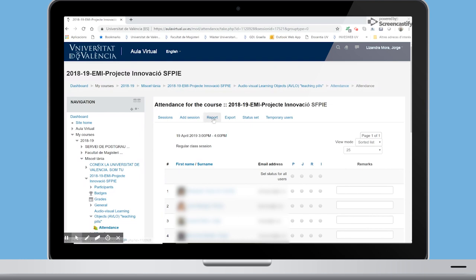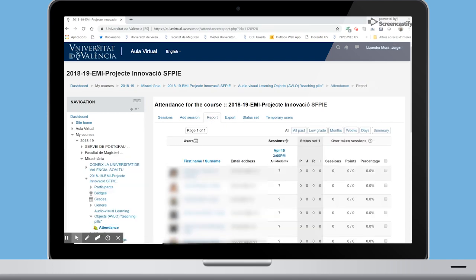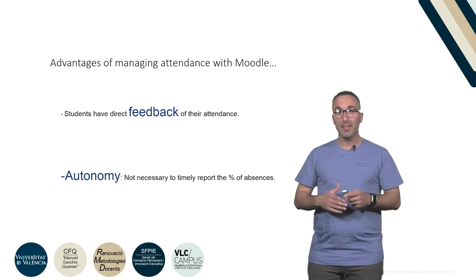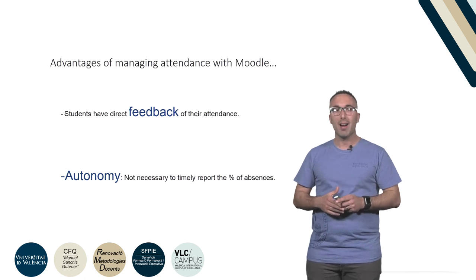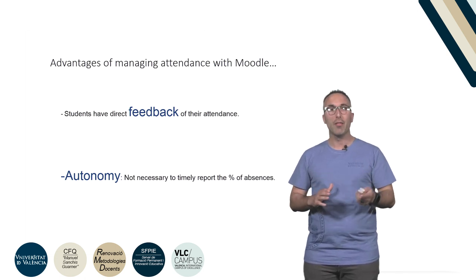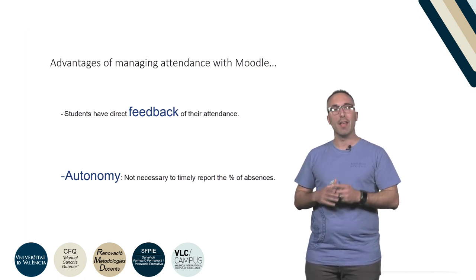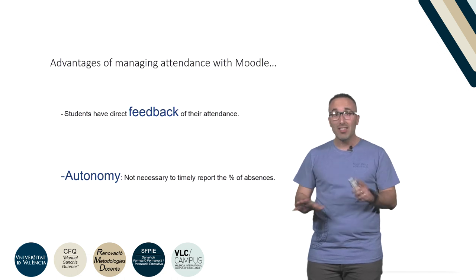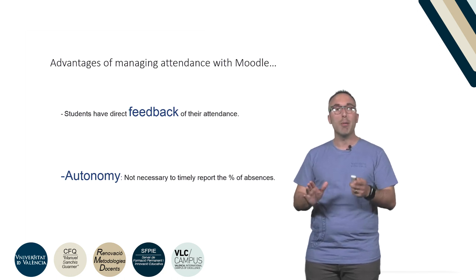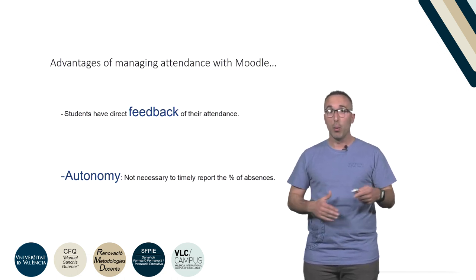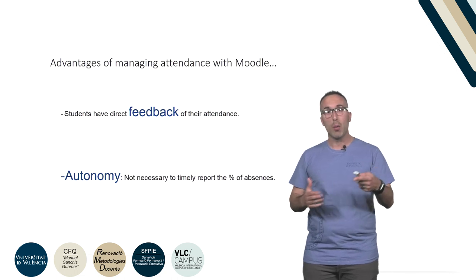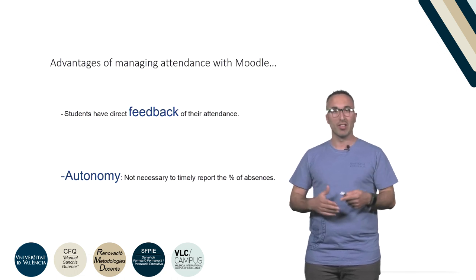If you go to Report, your students and you can have the information of the register. The principal advantages of managing attendance by Moodle are that the students have a direct feedback of their attendance, and it is not necessary to timely report the percentage of absences in class by which students can lose the right to a continuous assessment.